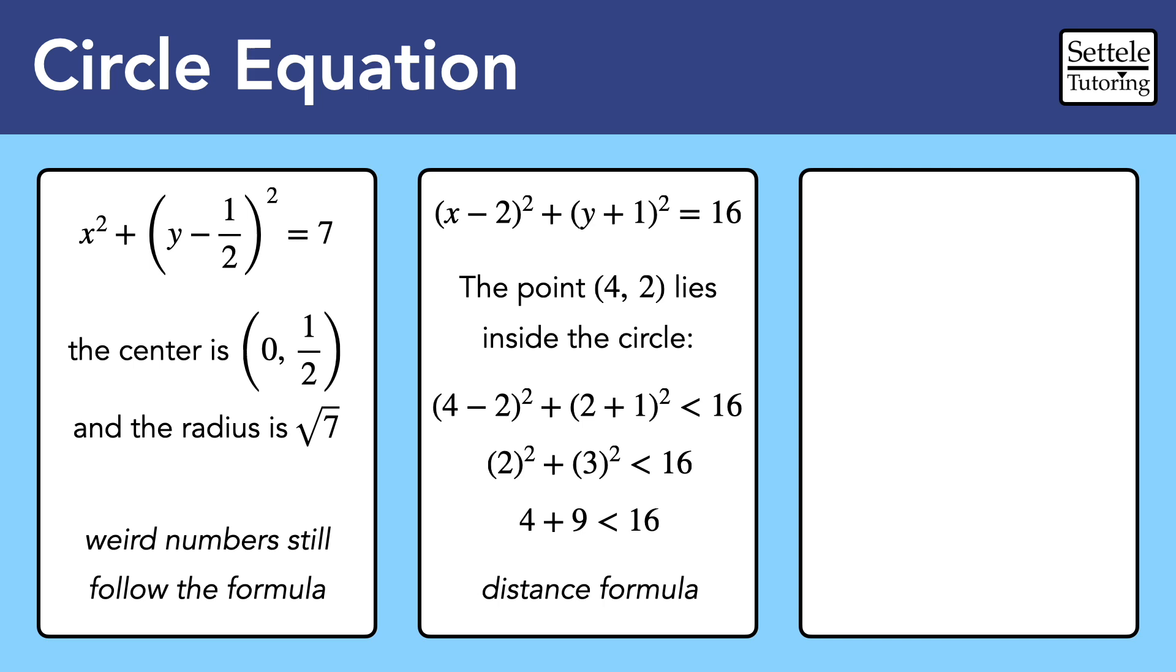When we simplify, we prove that the point is in the circle, because 13 is less than 16. If the left side were greater than 16, we would have a point outside the circle.